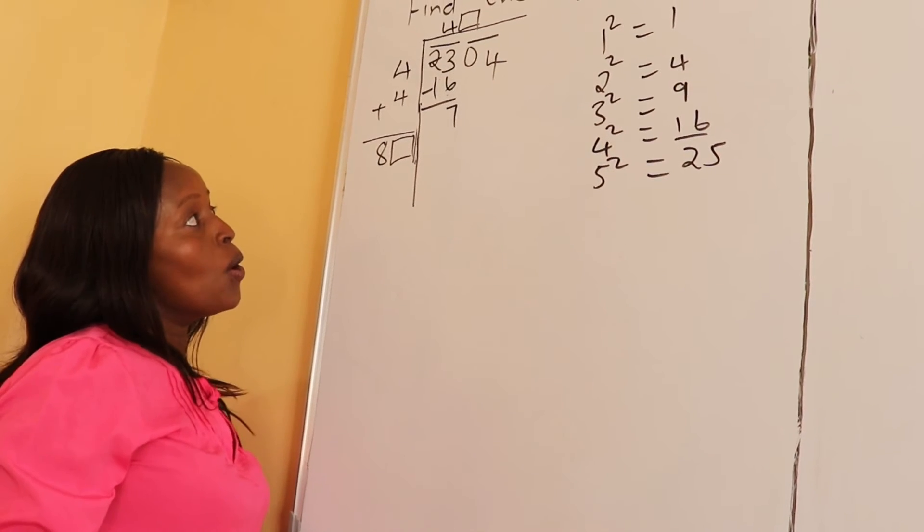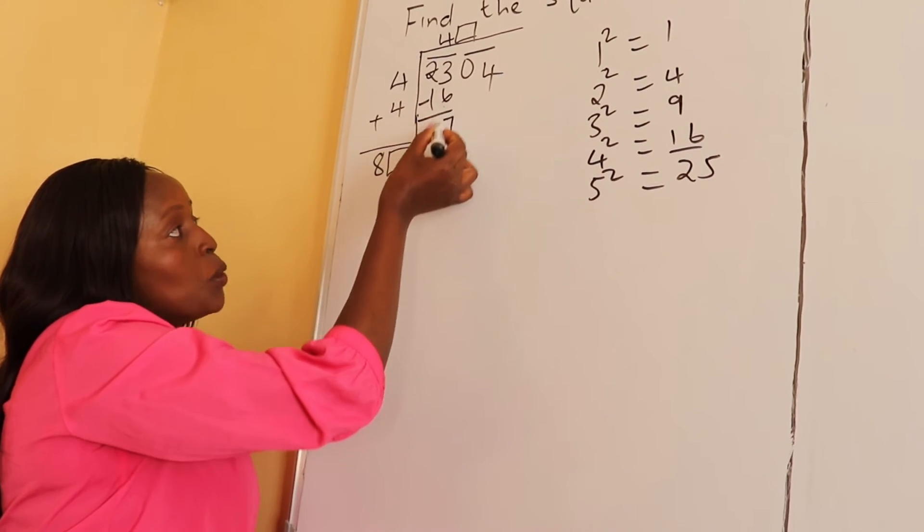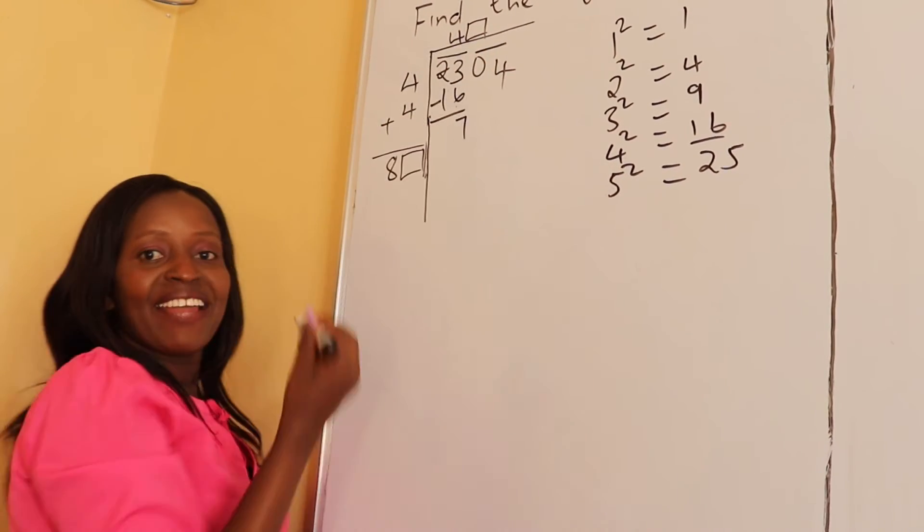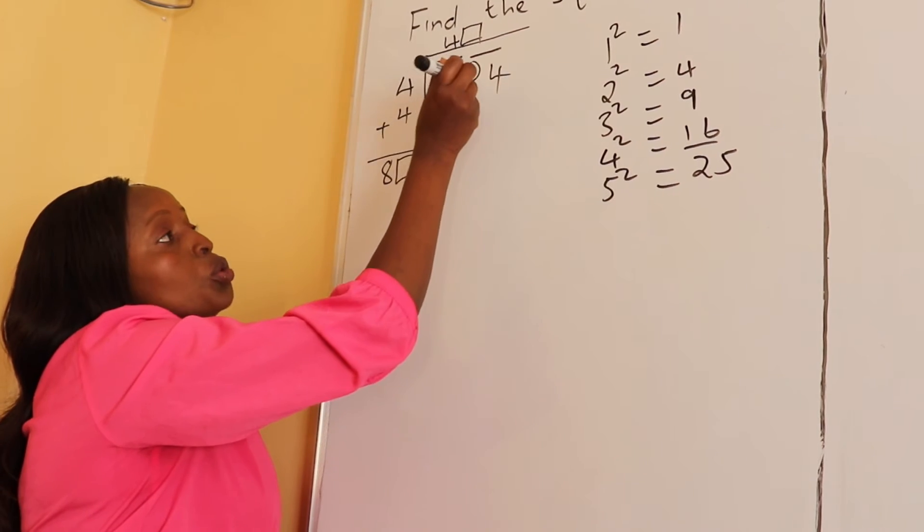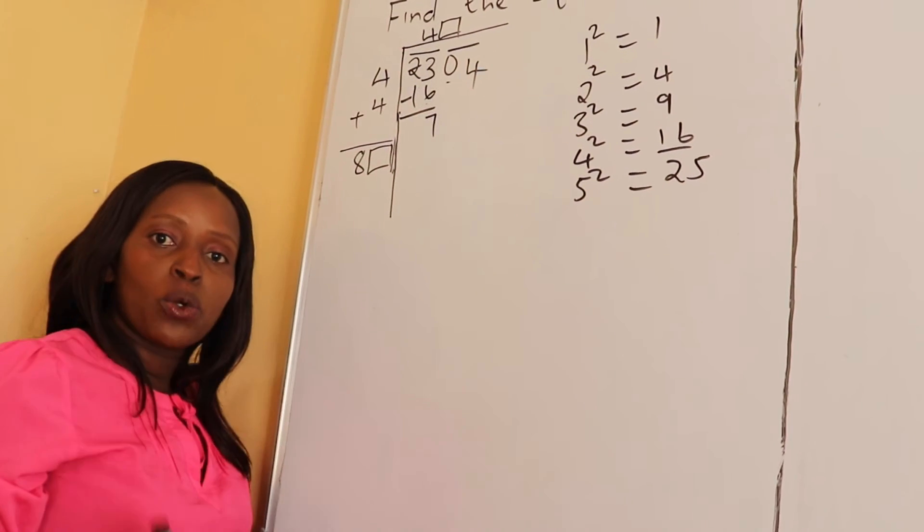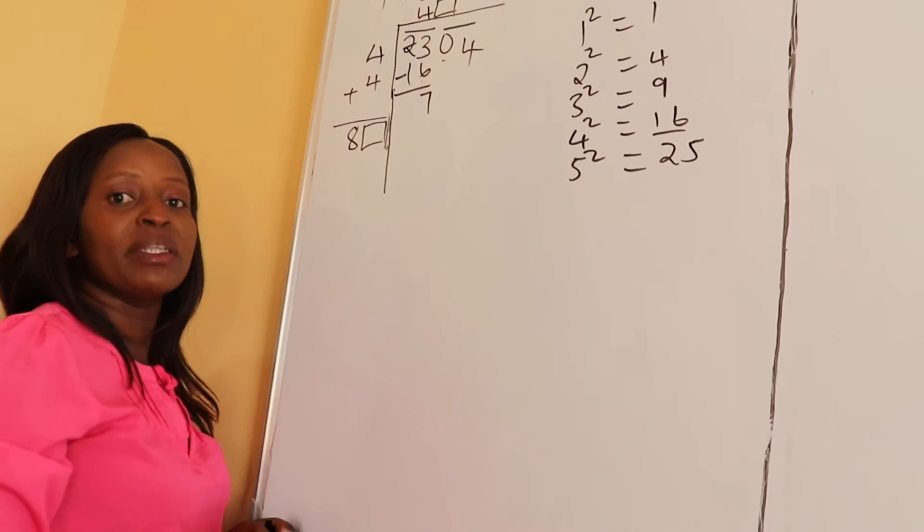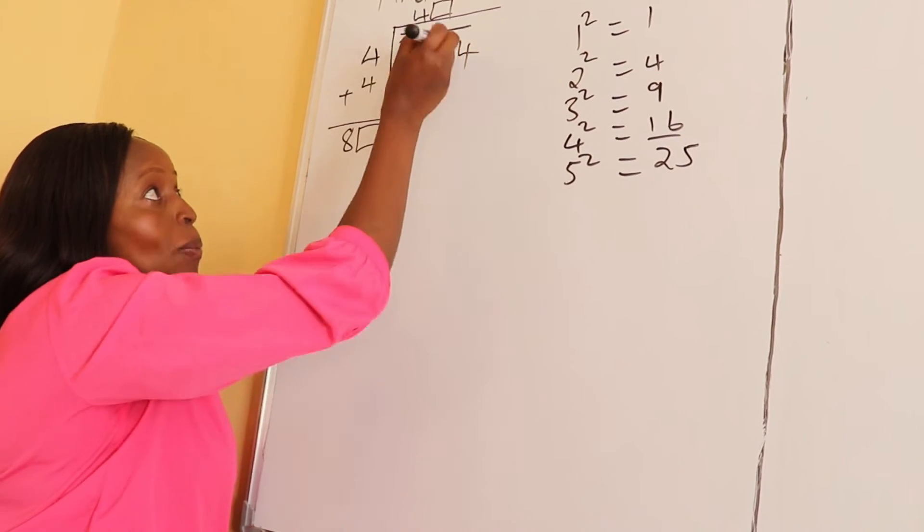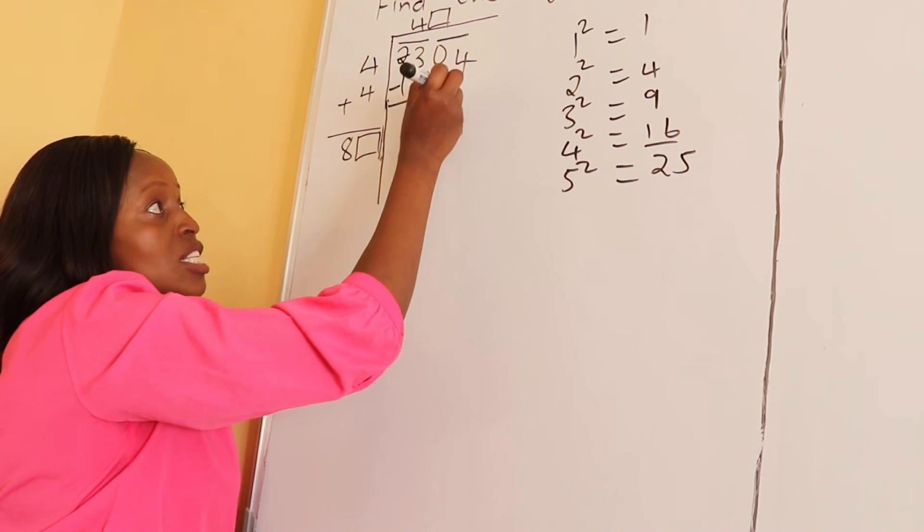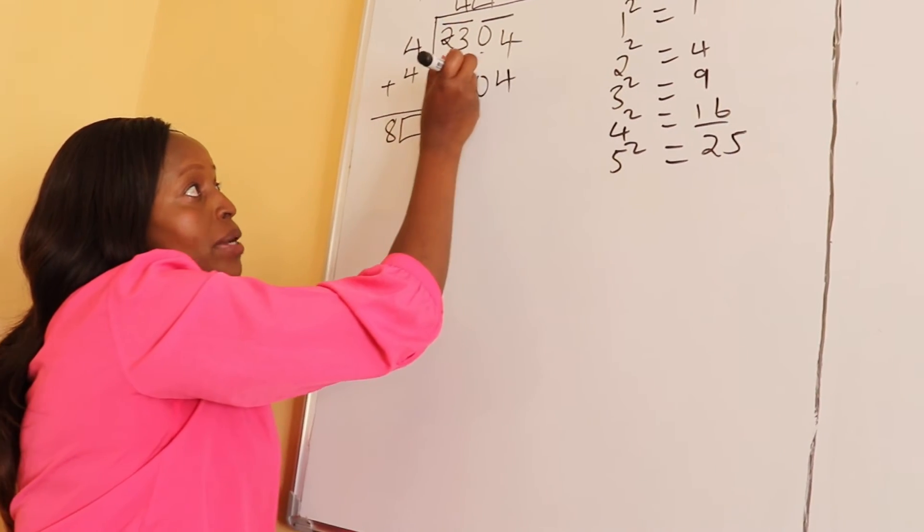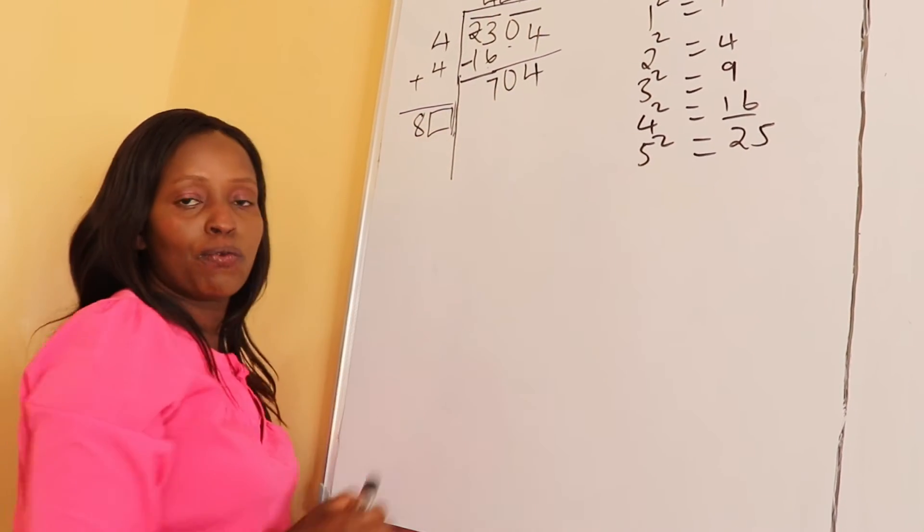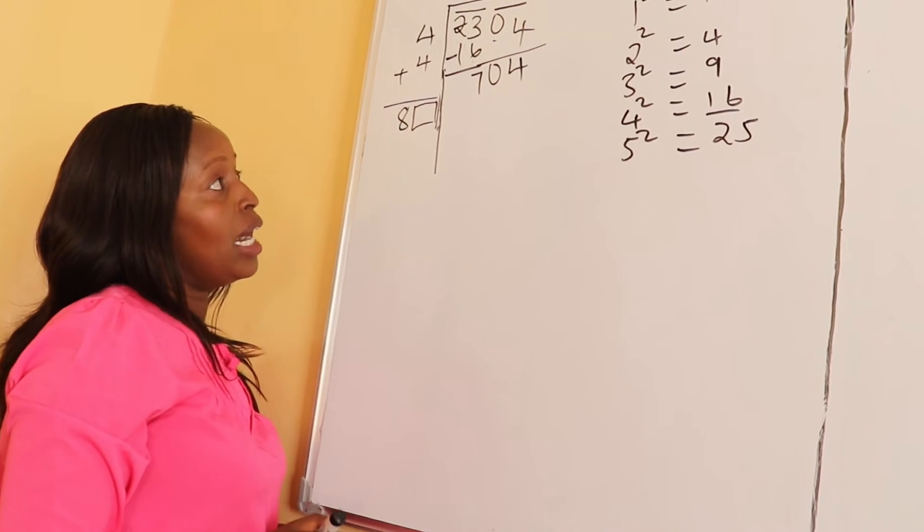After you put the box, now you drop the other pair. Make sure you don't drop a single digit, you drop a pair. That's why we started by pairing them. So we drop here as a pair, and our pair is 04. Our new number is 704.